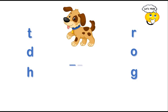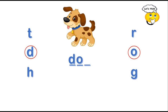The first letter is missing. The second letter is missing. And the last one is missing. Okay, where are the letters? Which letters are missing? Think about it. The first letter is D. The second one is O. The third letter is G. What's the word? Dog.